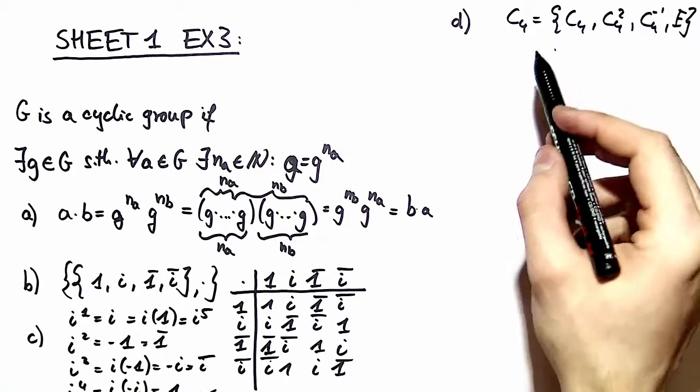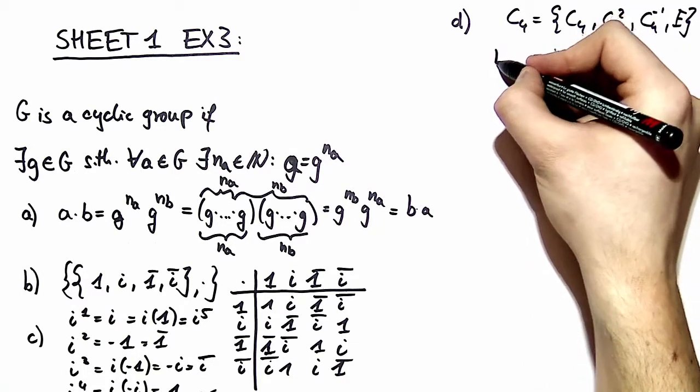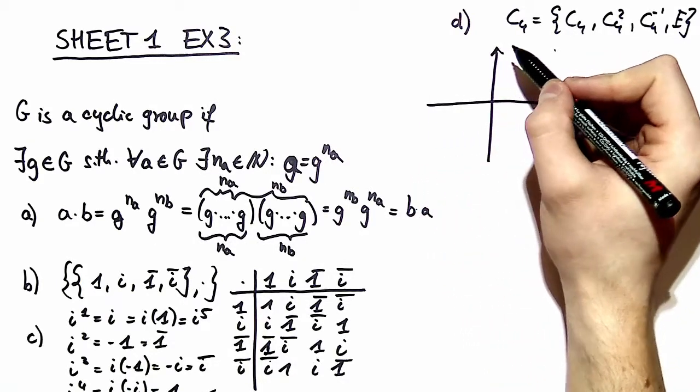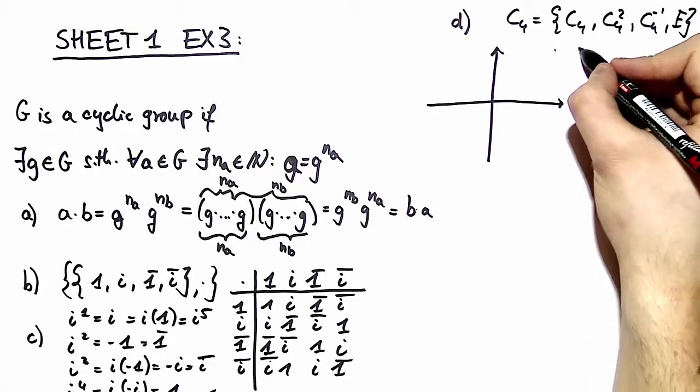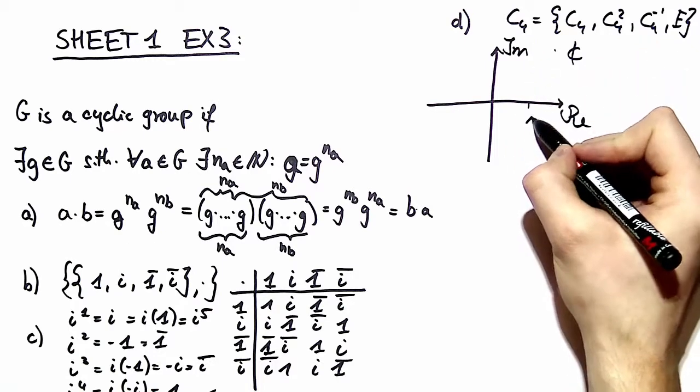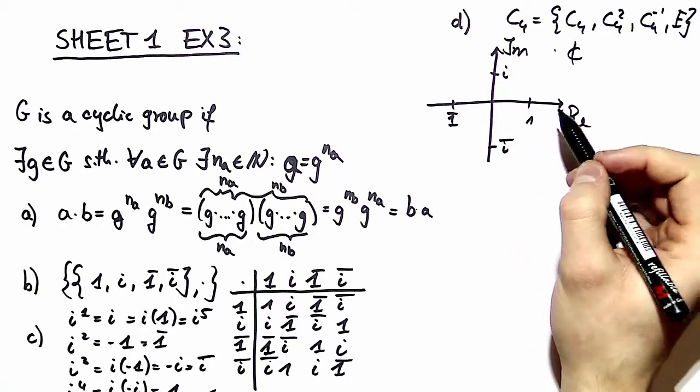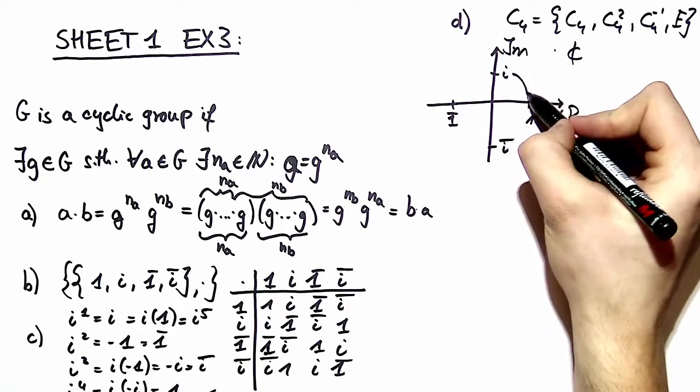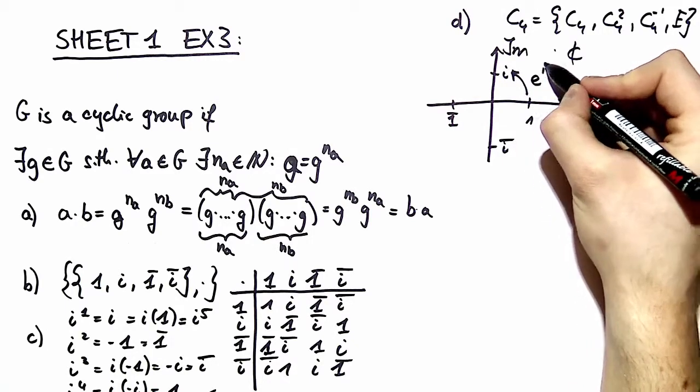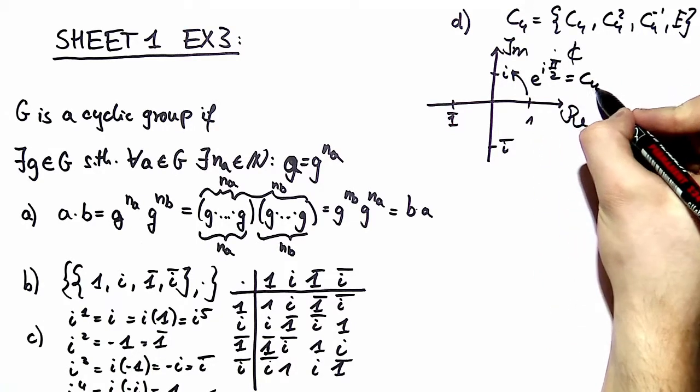We have to show that these two have the same multiplication table. Of course, we can write down the multiplication table and see that there is a correspondence, but a more educated way to do it is to see a geometric correspondence. Well, this is our complex plane. This is the real axis, this is the imaginary axis. Then we can distribute our elements from our original group and see that taking the element i corresponds to a rotation which can be represented in the complex plane by e to the power of pi half, which is exactly C_4.